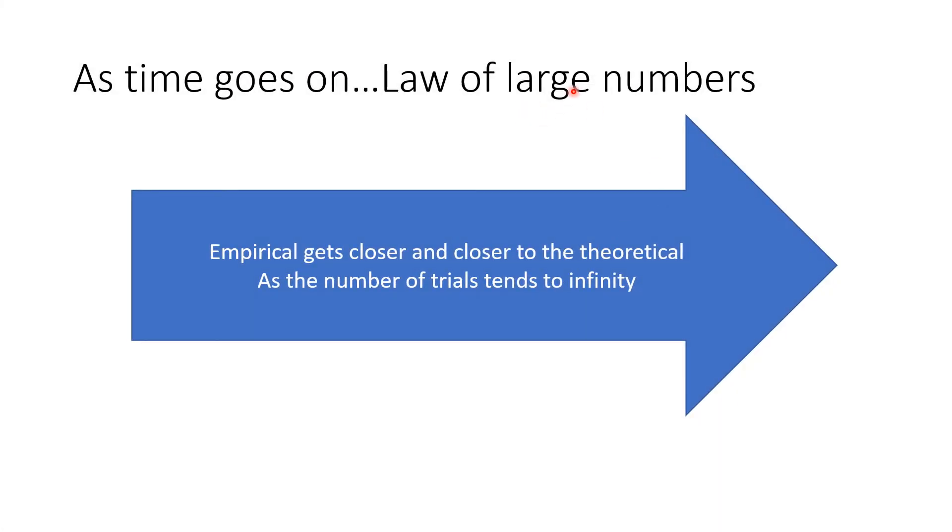Now the law of large numbers says, as time goes on, if I do this over and over and over again, the empirical will get closer and closer to the theoretical as the number of trials tends to infinity. That's called the law of large numbers.